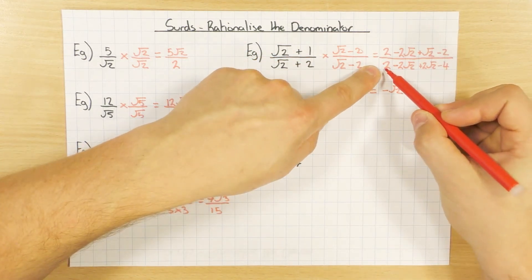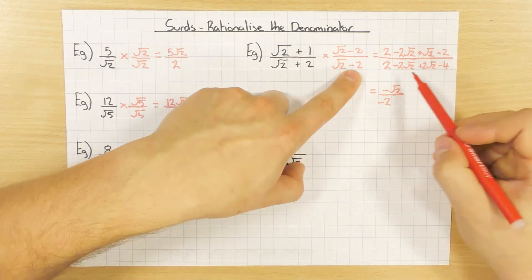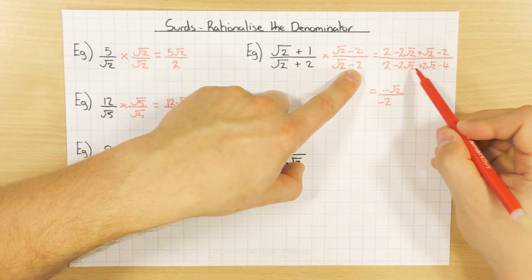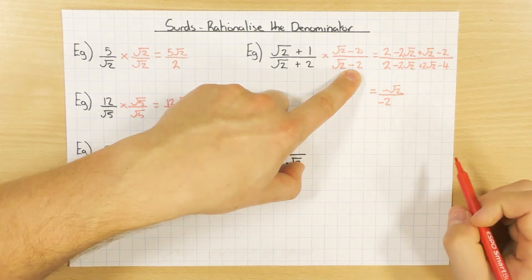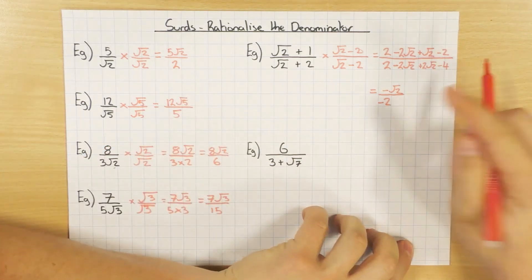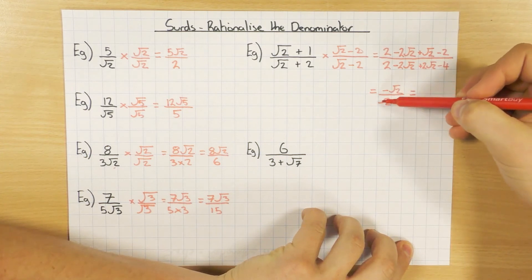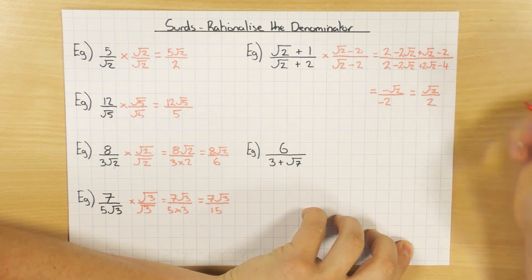Now this is where it's a bit more interesting. So on the bottom, 2 take away 4 will give me minus 2, but this is why I changed it to a minus, because minus 2 root 2 plus 2 root 2, they're going to cancel out. So I cancel out my surds, so I'm just left with the whole number. We can just tidy that up a little bit more though, because a minus divided by a minus is a positive, so we can say that's root 2 over 2.